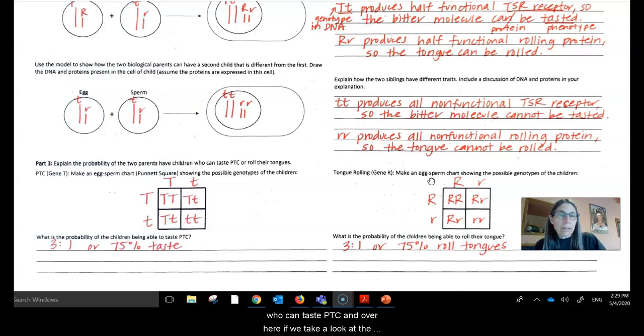And over here, if we take a look at the chart involving tongue-rolling gene, so we have the contribution of one parent, the contribution of the other parent, and then we see the potential combinations in the offspring. Once again, what do we see? We see a classic outcome of a three to one ratio where 75% are going to have the phenotype being able to roll their tongues.